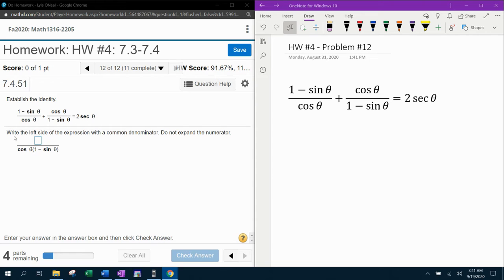And somehow all of this mess is supposed to equal two secant theta. So let's see what they want us to do first. Write the left side of the expression with a common denominator. Do not expand the numerator. So I'm not exactly sure how much expansion they will allow or don't want us to do. I'm going to put in what I assume they want, and if it's not right, I'll adjust.